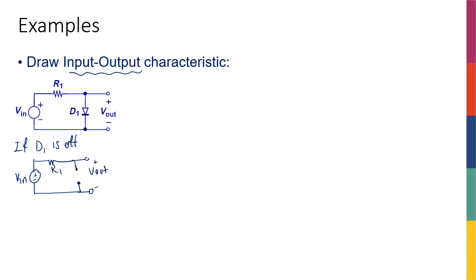If there's no current, then the voltage across this resistor is going to be zero volts. That means here is going to be V_in, and here is going to be the negative terminal of our voltage source. So if I call that ground, on top of the circuit I'm going to have the voltage V_in. So when the diode is off, V_in and V_out are going to be equal to each other — V_in equals V_out.